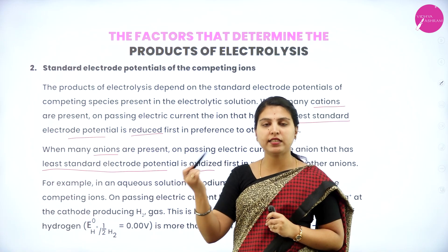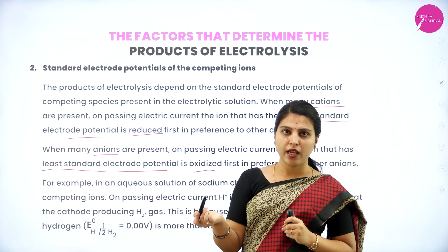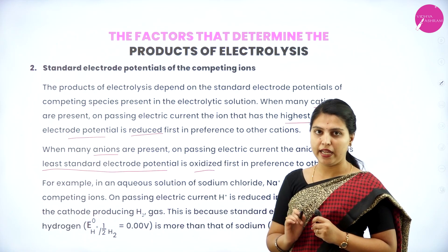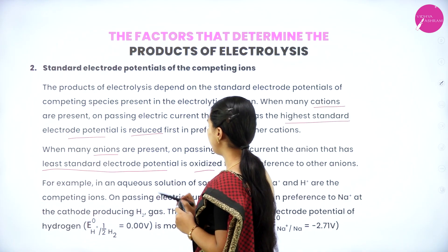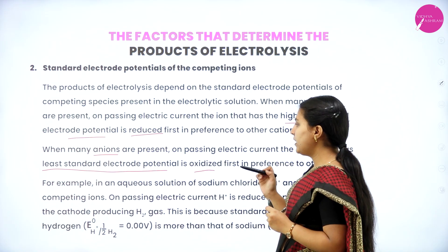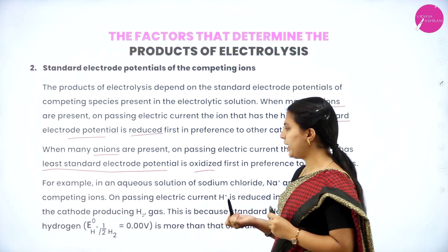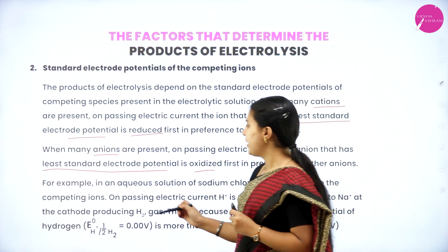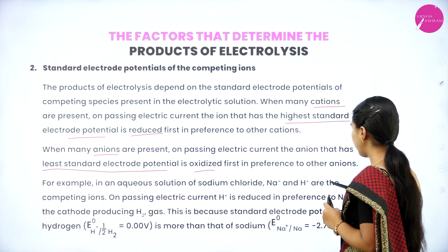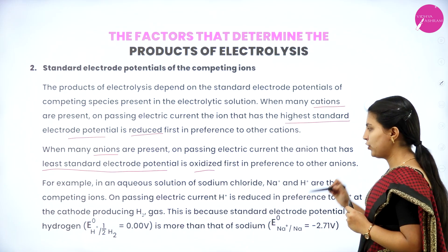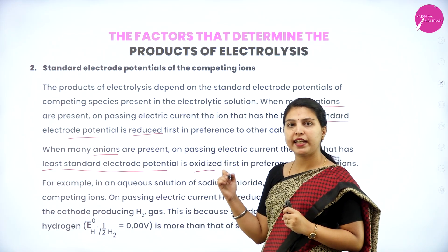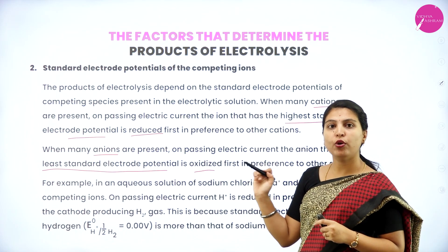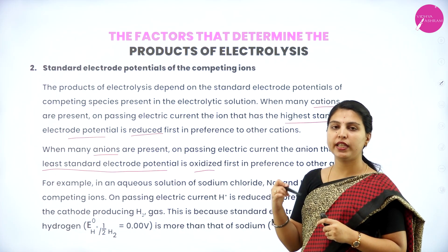Whenever a cation has the highest electrode potential, it will get reduced first among others. Whenever an anion has the least electrode potential, it will get oxidized first. For example, in an aqueous solution of sodium chloride (NaCl), Na⁺ and H⁺ are the competing ions. On passing electric current, H⁺ is reduced in preference to Na⁺ at the cathode, producing H₂ gas, because the standard electrode potential of hydrogen is more than that of sodium.